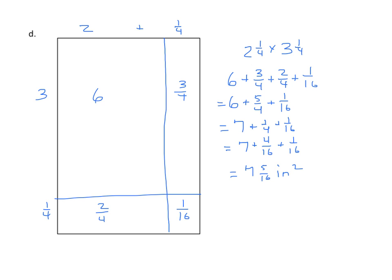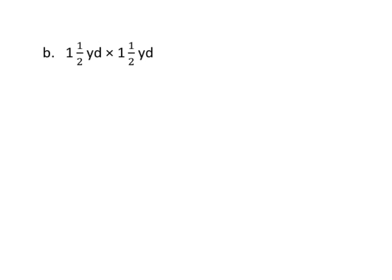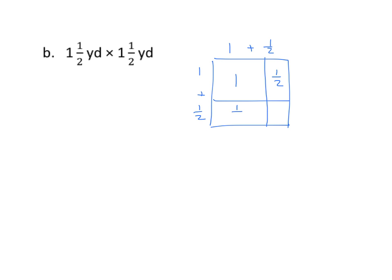Now we'll do some problems without measurement, practicing multiplying mixed numbers times mixed numbers. Here we have one and a half yards by one and a half yards. Drawing the model, we label one plus one-half and one plus one-half. One times one is one. One times one-half is one-half. One-half times one is one-half. And one-half times one-half is one-fourth. Finding the sum: one plus one-half plus one-half plus one-fourth equals two and one-fourth square yards.